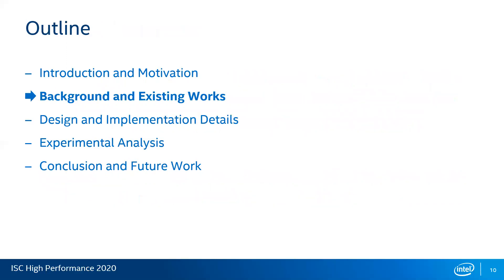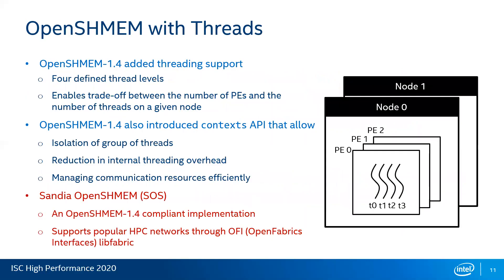I'm going to talk about a little bit of background of our work. OpenSHMEM has added threading support since version 1.4. It has four defined thread levels, similar to what MPI has, providing a trade-off between the number of PEs and the number of threads on a given node. OpenSHMEM 1.4 also introduced the context API, which allows managing communication resources efficiently from different threads. Intel manages the Sandia OpenSHMEM library, which is an OpenSHMEM 1.4 compliant implementation supporting different HPC networks through the OFI libfabric interfaces.